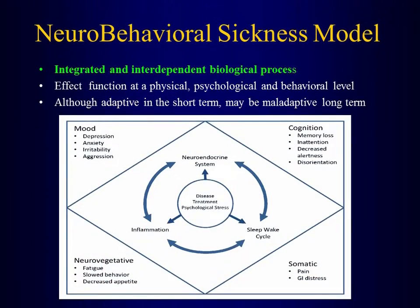When we think about a neurobehavioral sickness model, disease, treatment, and psychological stress interact with the neuroendocrine system, inflammation, and the sleep-wake cycle, causing domains of dysfunction. I've broken those down into mood, cognition, neurovegetative, and somatic. What we're going to be talking about predominantly is pain, but we'll touch on a few others as well.